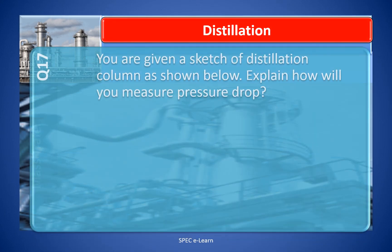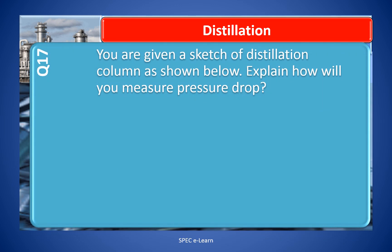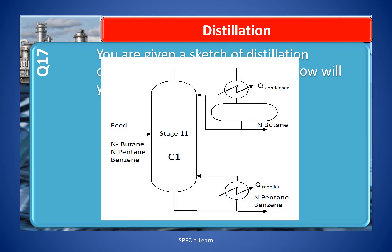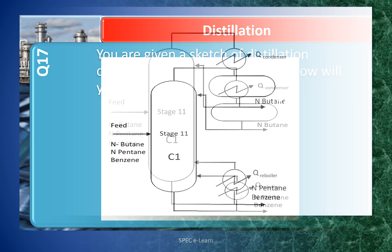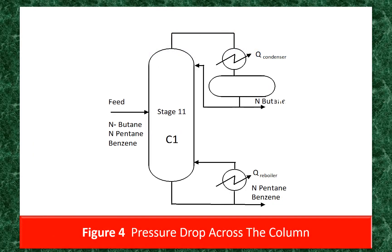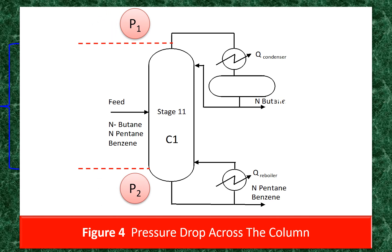Question number 17. You are given a sketch of a distillation column as shown below. Explain how you will measure the pressure drop across the column. The pressure drop is measured as explained in the sketch. The imbalances of column pressures at the bottom and top of the column are individually tapped as shown in the figure and fed to a differential pressure transmitter, which gives the output as the column differential pressure.